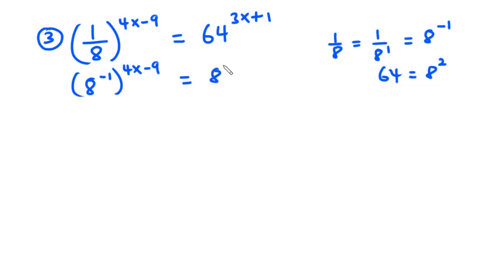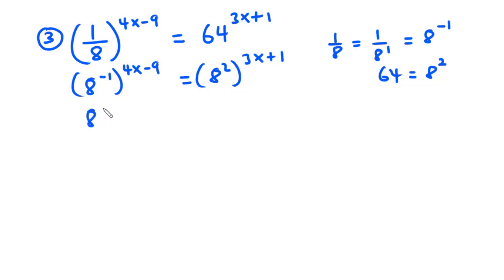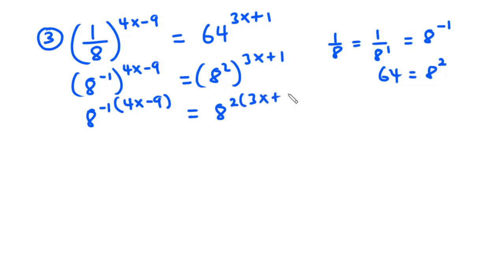So we have 8 squared exponent 3x plus 1. Now let's multiply the exponents across. So we have 8 exponent negative 1 into bracket 4x minus 9 equals 8 exponent 2 into bracket 3x plus 1.